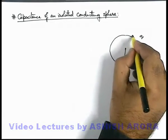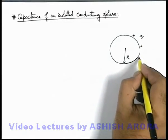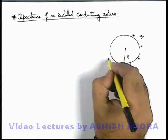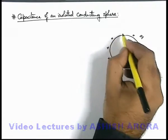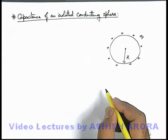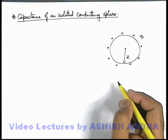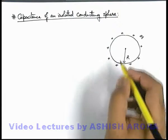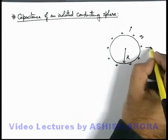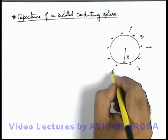If it is given a charge q, we know that in an isolated sphere, the whole charge is distributed on its outer surface uniformly because everywhere its radius of curvature is the same. The electric field due to the sphere exists from its surface to infinity.